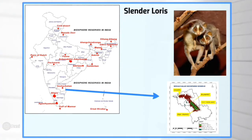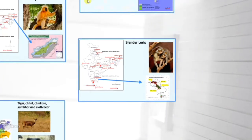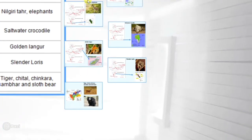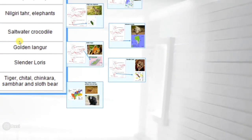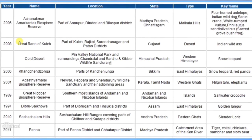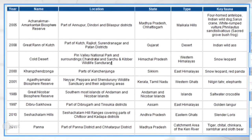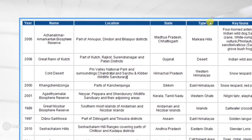Next is Panna Biosphere Reserve, located in Madhya Pradesh. The main key fauna found here are Tiger, Chital, Chinkara, Sambar, and Sloth Bear.